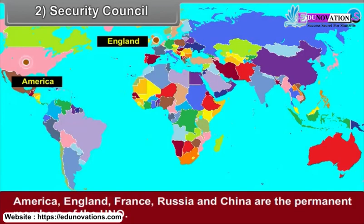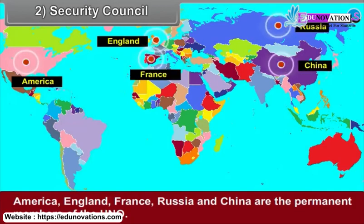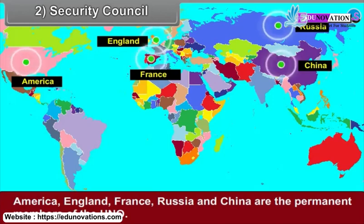America, England, France, Russia, and China are the permanent members of the UNO.